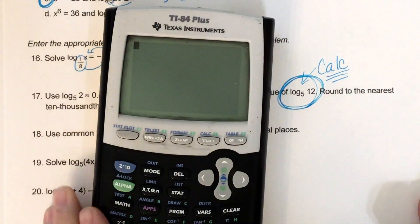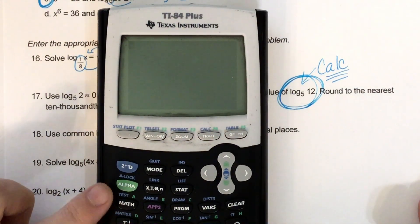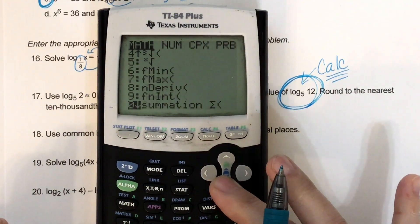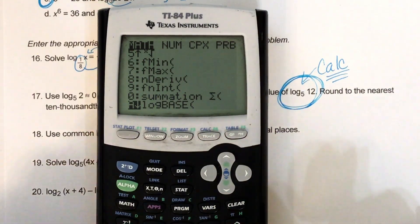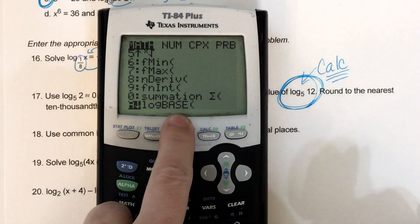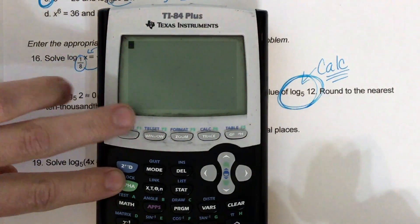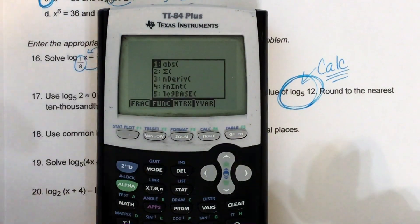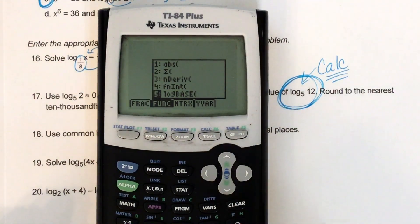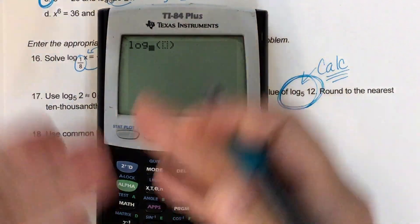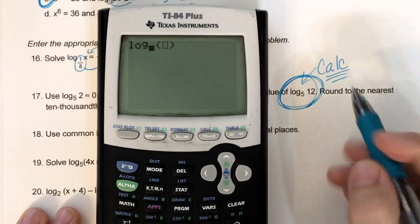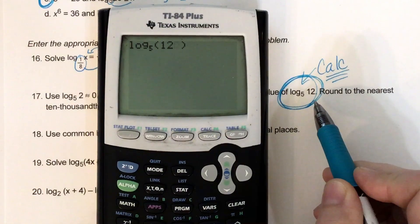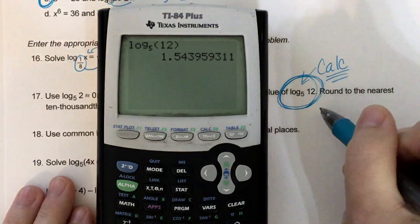Okay, so one way to do this is to go to math, and then you can arrow down, and it's this one right here. It's choice A. Now, the other way you can do it is alpha window, alpha window, and then it's number 5. So it doesn't matter which way you do it. Both of them will pop up the same thing, but 5 is my base. So I type in the 5, and then I type in the 12.